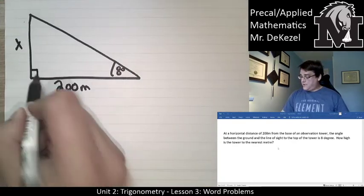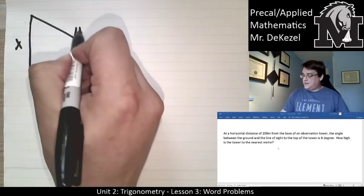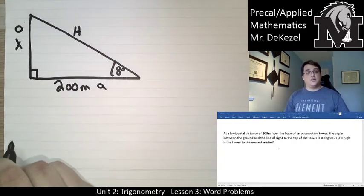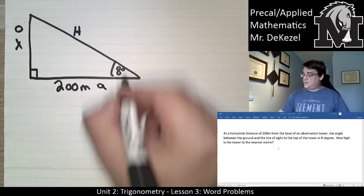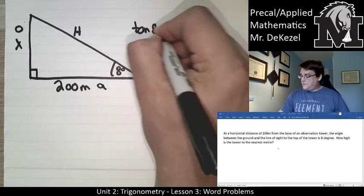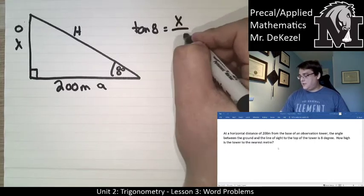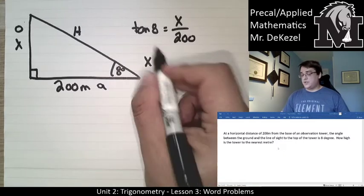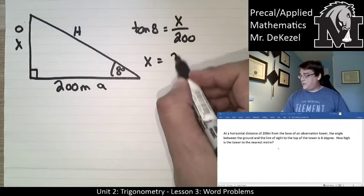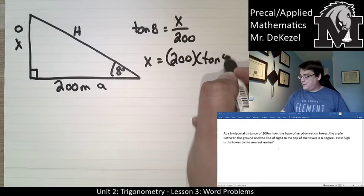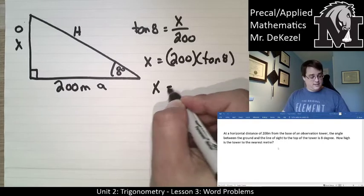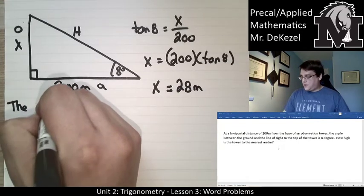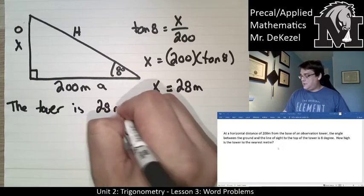The tower makes a 90-degree angle with the ground, making the line of sight the hypotenuse. The side opposite the 8-degree angle is the tower height (x), and the adjacent side is 200 meters. Since we're using opposite and adjacent, we use tangent. Tan(8°) = x/200, so x = 200 × tan(8°), which gives x = 28 meters. The tower is 28 meters tall.